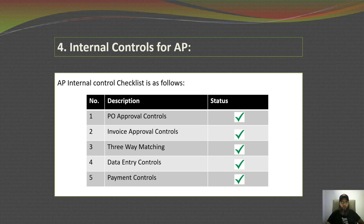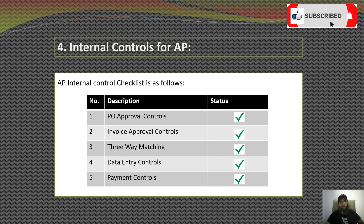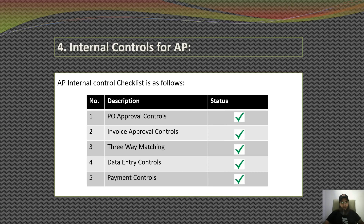Before issuing any payment, ask the supplier to provide you with a statement of account and match your system report against that statement. If there are any differences, clear them first, then make the payment. Also check with the stores or relevant department if there is any return or debit note still pending and not updated in the system. Update that return and debit note first, and after deducting that amount you can make the payment to the supplier.